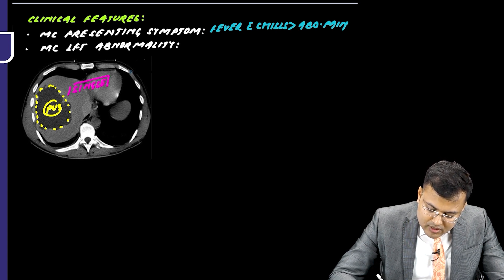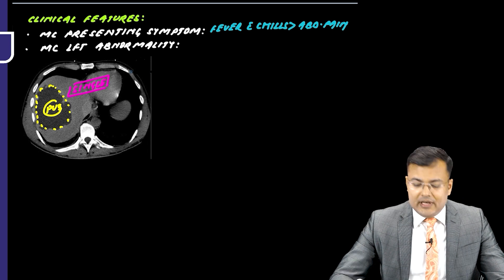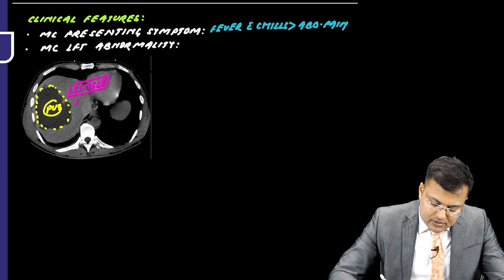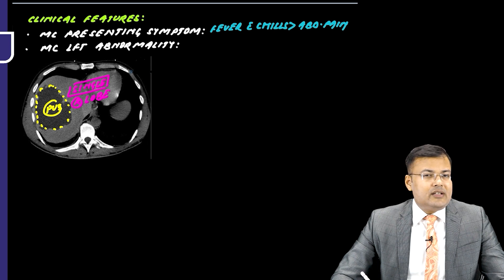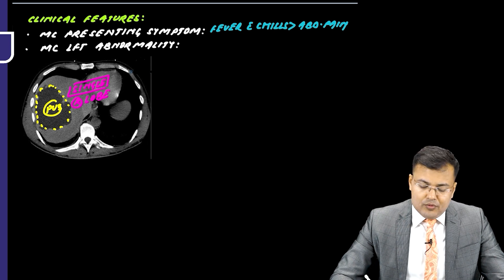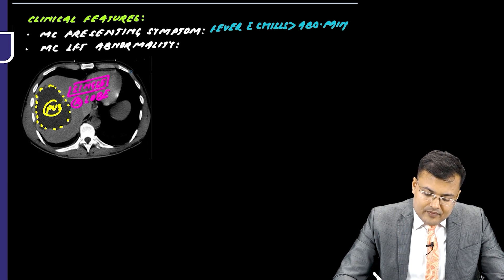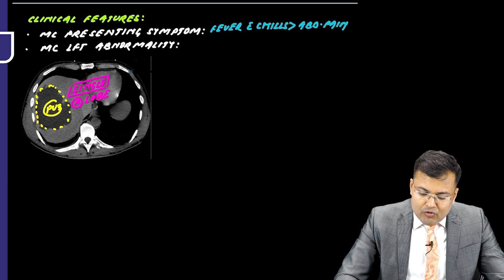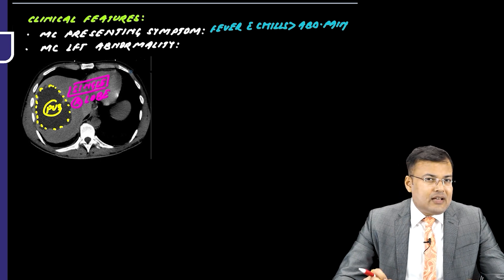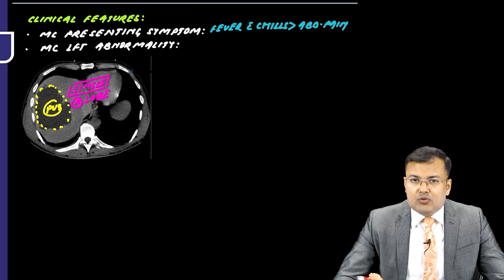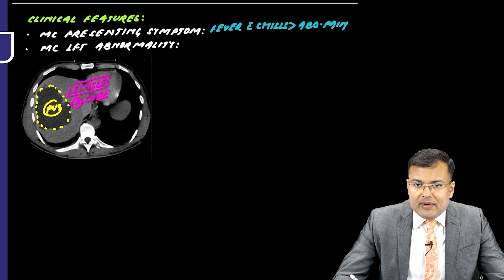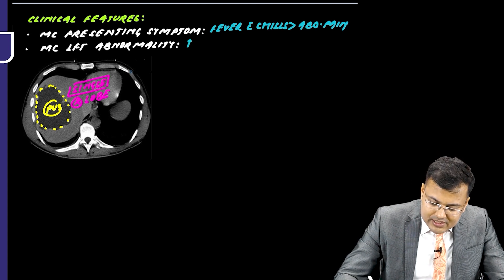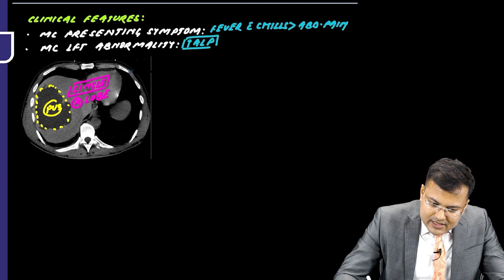In the majority of cases, the cavity is single and most commonly involves the right lobe of the liver. The most common route of involvement is the biliary tract, with biliary obstruction present. Therefore, the most common LFT abnormality is raised ALP.